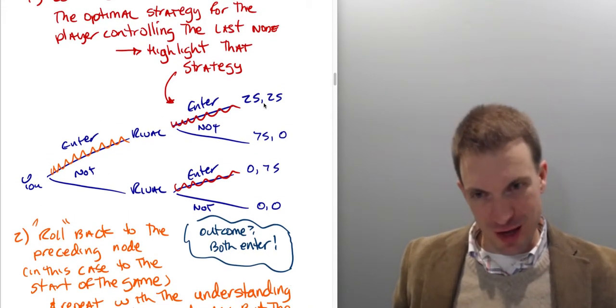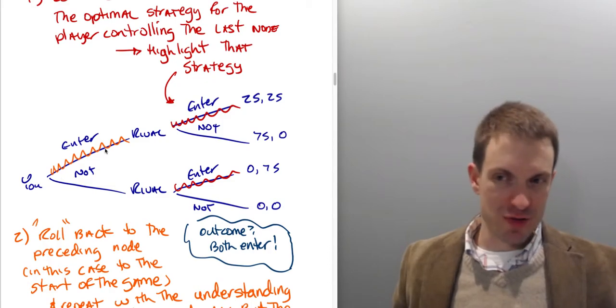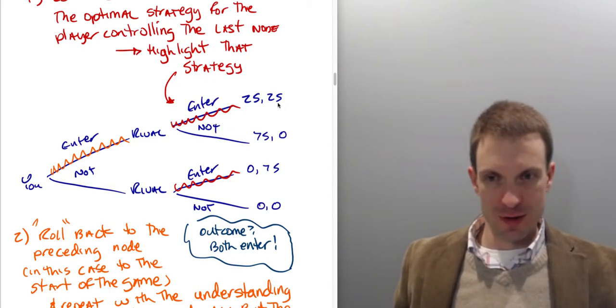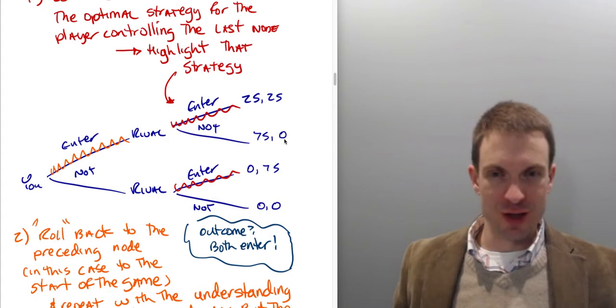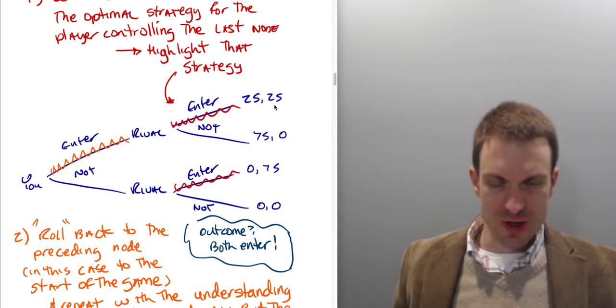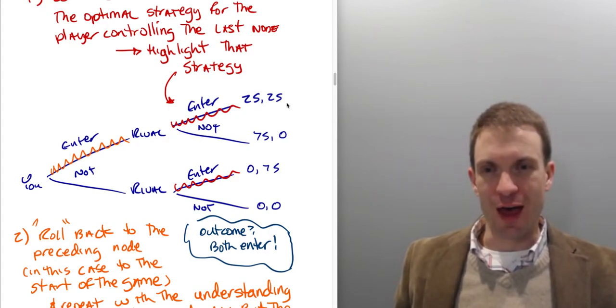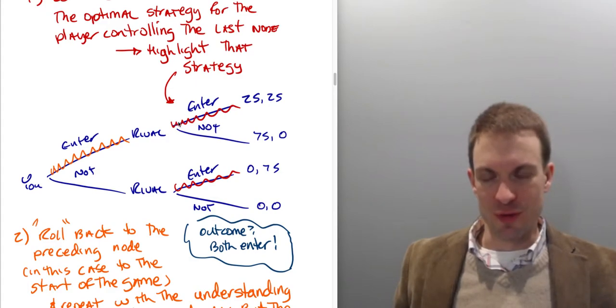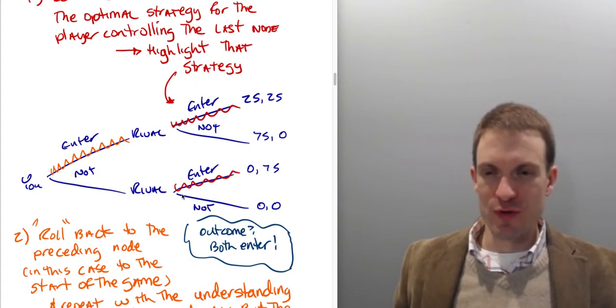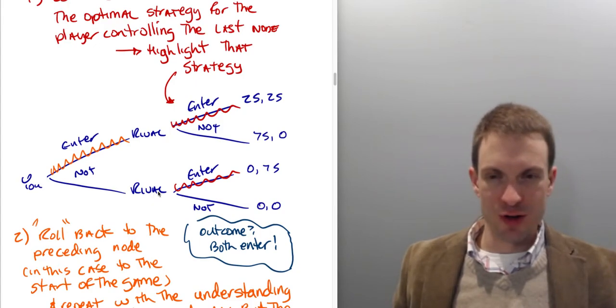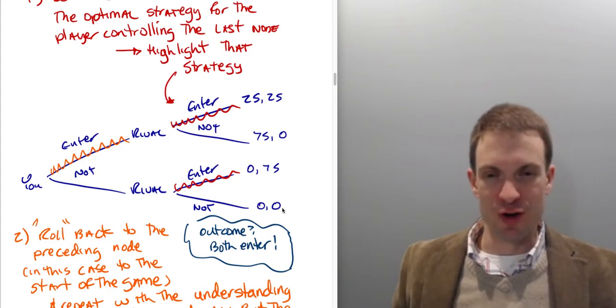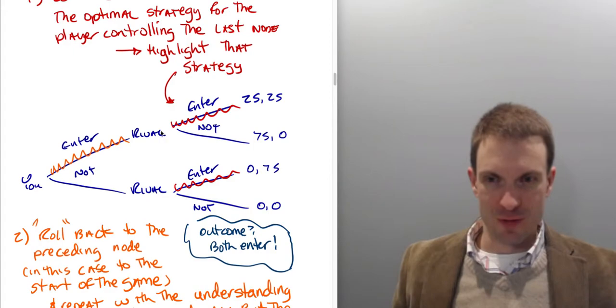So I'm going to go to the end of this game, and I'm going to say, what's my rival going to do after I've selected enter? Well, if the rival enters, they get $25,000. If the rival doesn't enter, they get zero. The Nash strategy, consistent with Nash play, has the rival selecting enter here. So I'm going to highlight enter, and then I'm going to move on. What if I didn't enter? What's the rival going to do? Well, if they enter, they get the $75,000. They're the only one in the market. If they don't enter, we both get zero. So they would rather enter. So notice I've highlighted that the rival is entering. Matter of fact, the rival has a dominant strategy to enter.